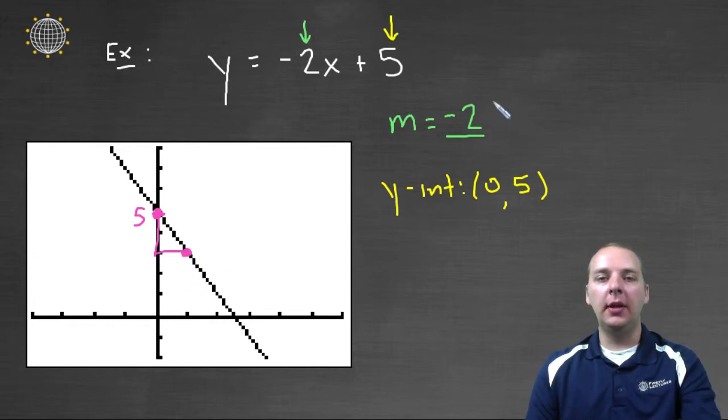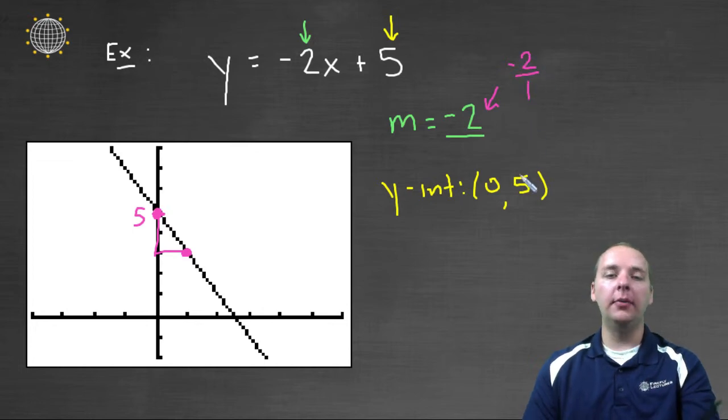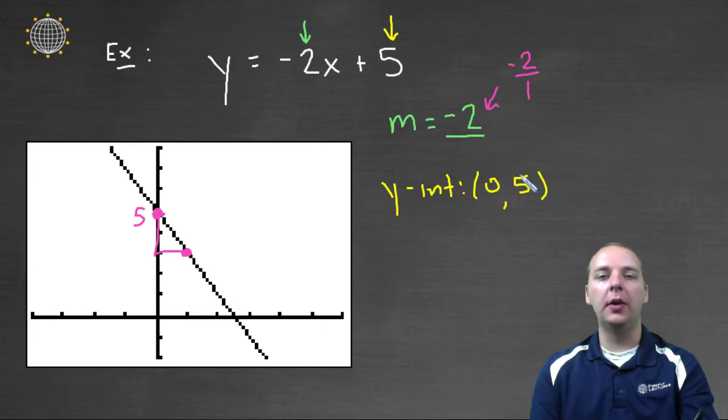Now what am I doing there? Well look at the slope here. Negative 2 is an integer, but as you well know any integer you could write as that number over 1, right? Like 5 is 5 over 1, and 7 is 7 over 1. Negative 2 is negative 2 over 1.